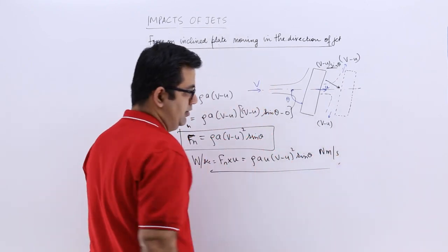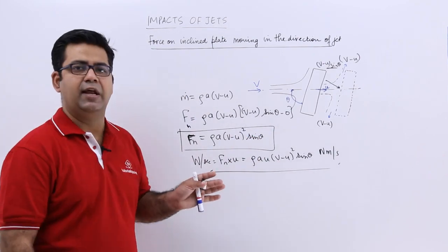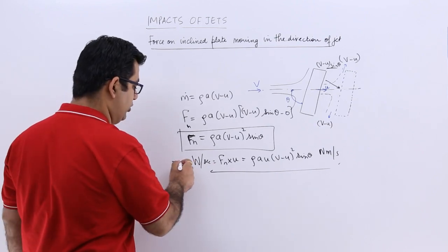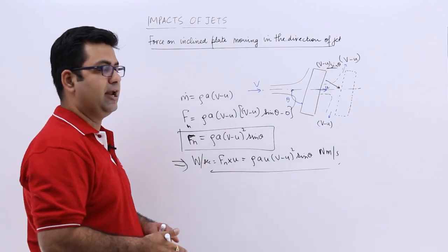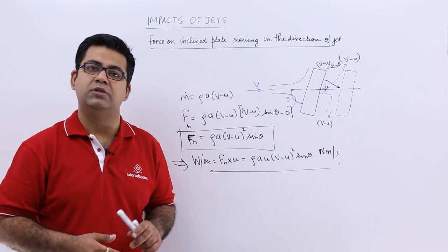So this is the work done by the jet onto the plate. This is a pretty easy analysis, almost analogous to the previous one with the inclined plate which was stationary. Now let's move on to some numericals on these topics.